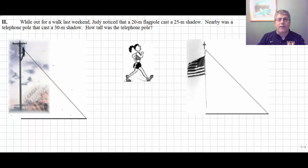So, while she was out for a walk last weekend, Judy noticed that a 20 meter flagpole cast a 25 meter shadow. Now, be careful, shadows are going to be found on the ground. So, the shadow of the flagpole created by the sun is 25 meters. And what we're going to have here is we automatically have similar triangles because the angle of the sun and we're going to assume that a flagpole and a telephone pole are going to be at right angles. So, these triangles we're working with are going to be similar.